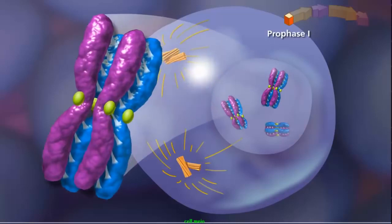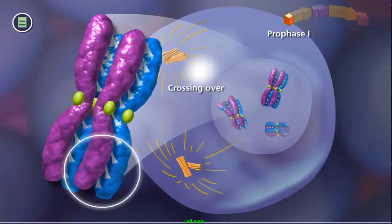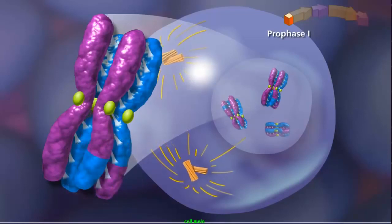Once this structure is formed, the second event, called crossing over, can occur. During crossing over, a physical exchange between chromosome segments of non-sister chromatids occurs, increasing genetic diversity.